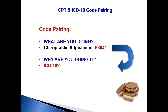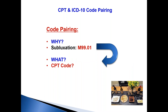Here's another example. Many of you are billing 98941 on most of your patients. Why? What's the diagnosis code that pairs with 98941? And the opposite: if you diagnose a patient with a subluxation — M9901 for a cervical subluxation — what CPT code does that pair with? I'll show you in a few minutes.